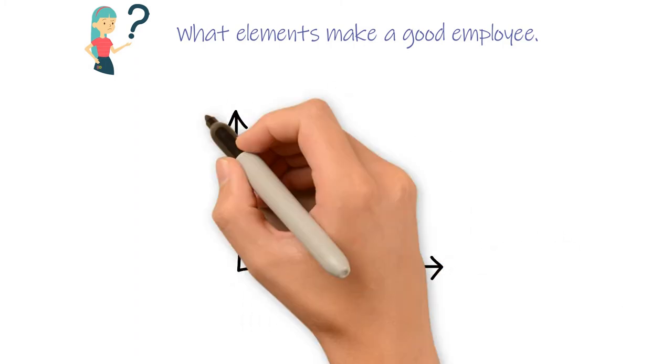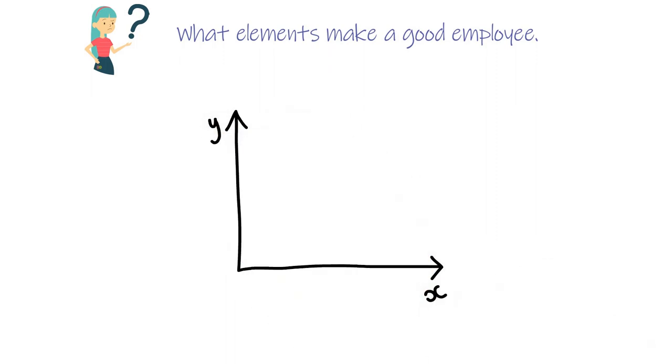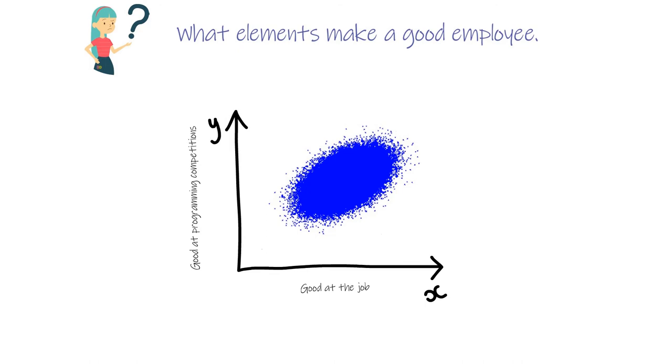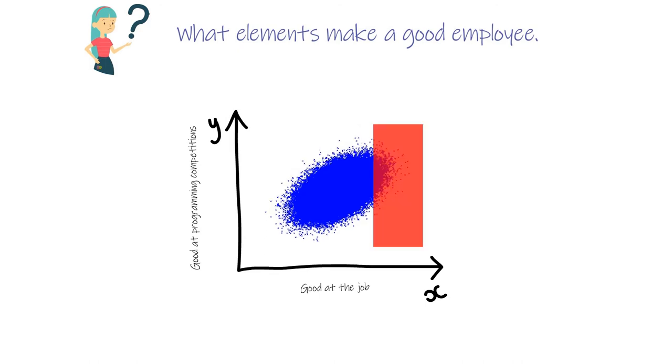Let's see a diagram. Good at programming competitions versus good at the job. HR aims to hire people who are good at the job, those red highlighted areas.